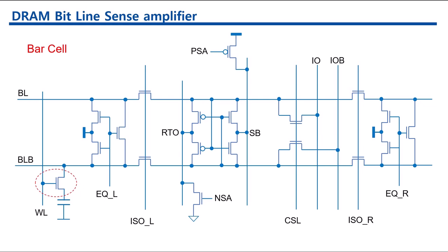If the memory cell is connected to the BitLine, we call it a true cell. The memory cell connected to the BitLine bar is a bar cell or complementary cell.